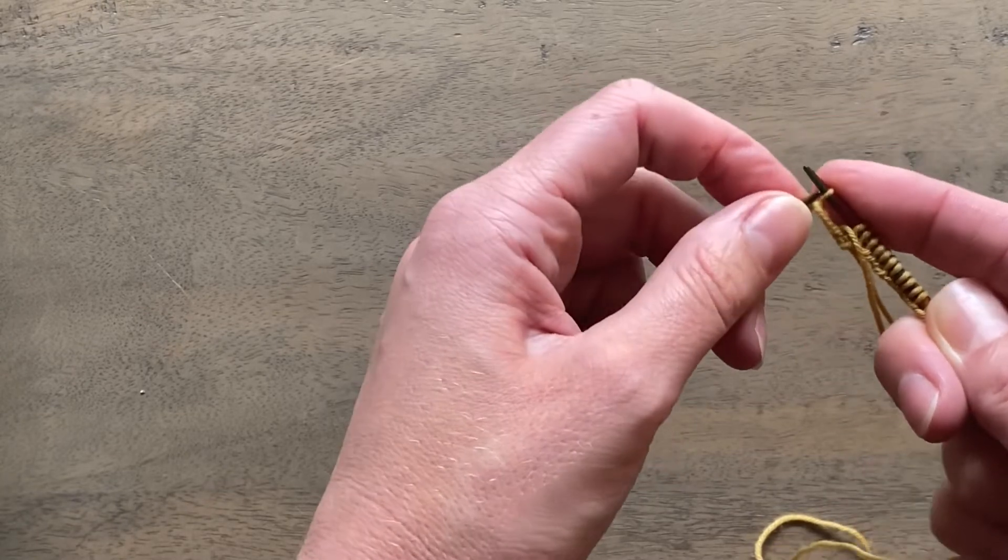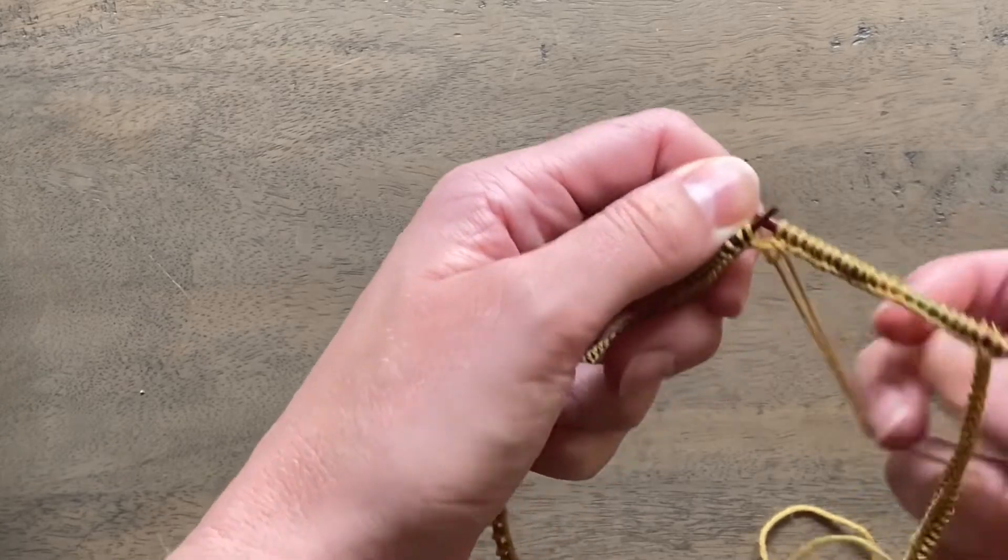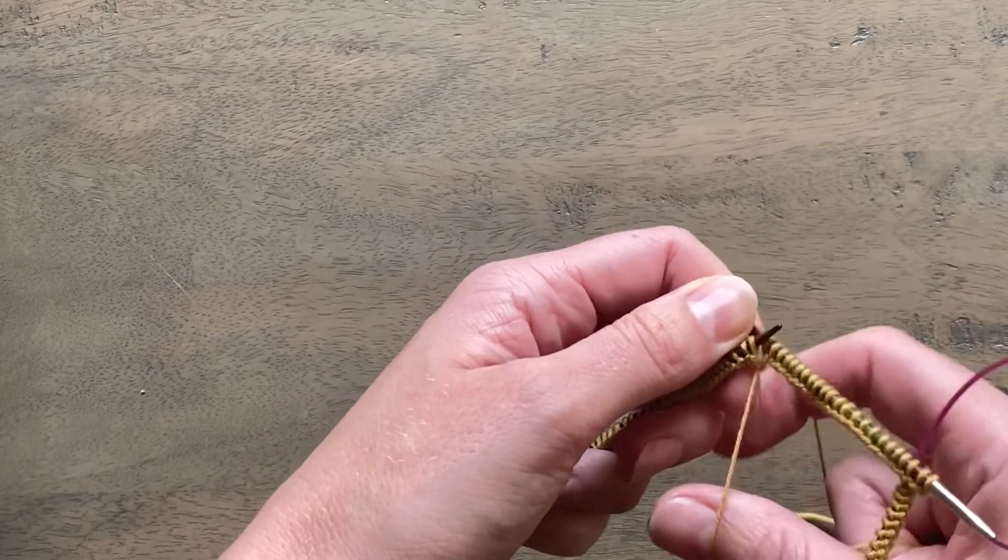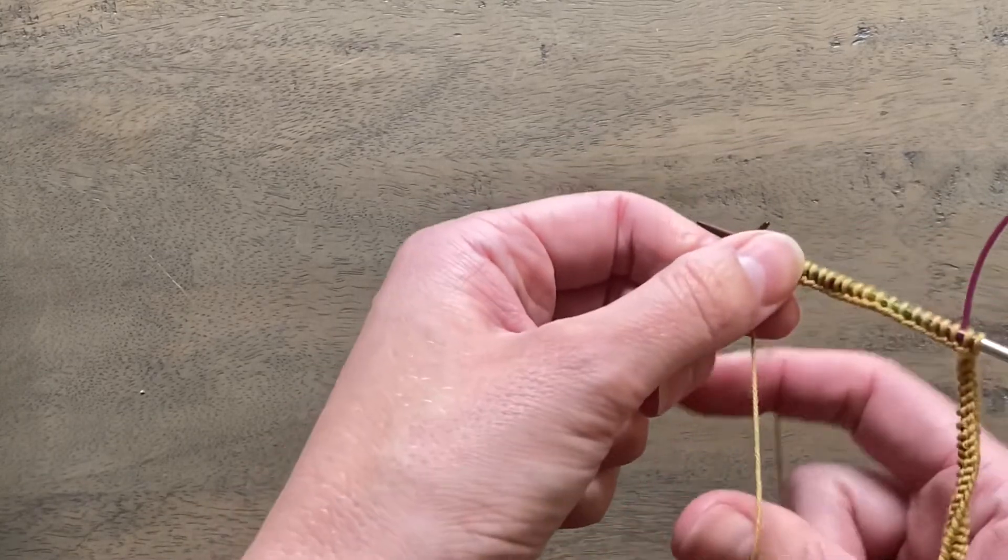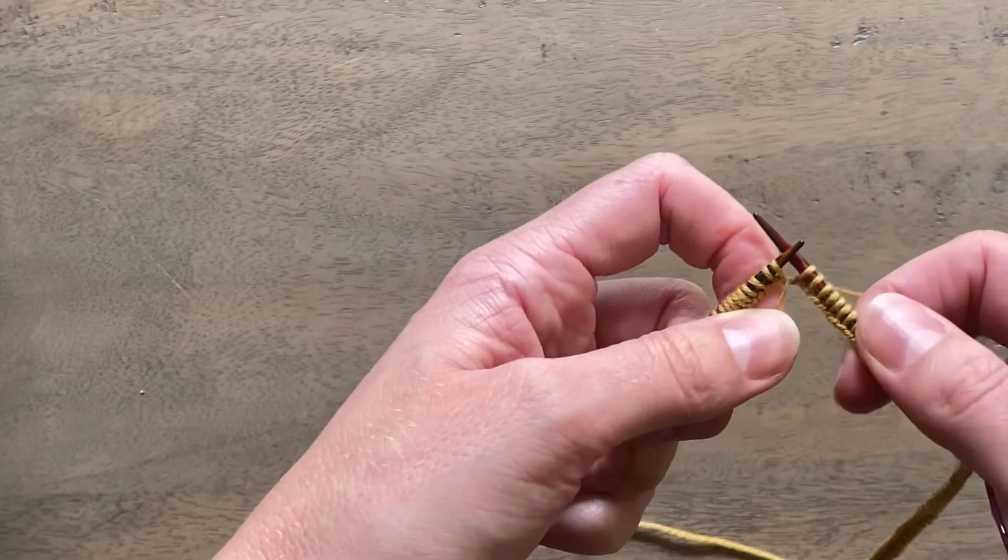Return that stitch to your left needle and then all you do is you pull on the two ends of your yarn and it creates this incredibly tight neat join in the round.